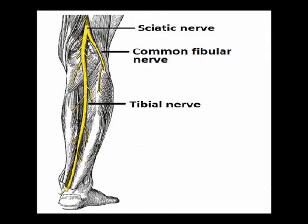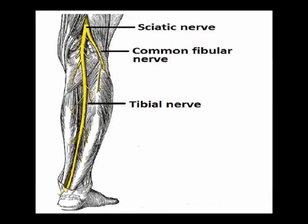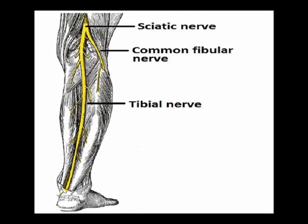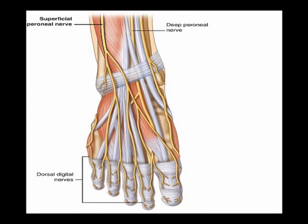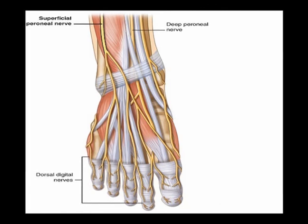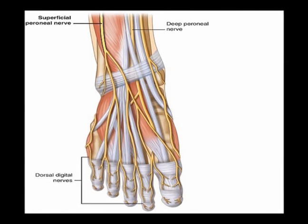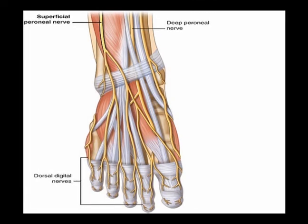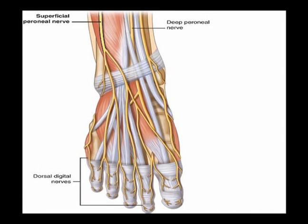A few centimeters superior to the popliteal fossa, the sciatic nerve bifurcates into the common peroneal nerve and the tibial nerve. The common peroneal nerve continues distally into the anterior and lateral compartments of the lower leg and foot, while the tibial nerve descends towards the posterior compartment.